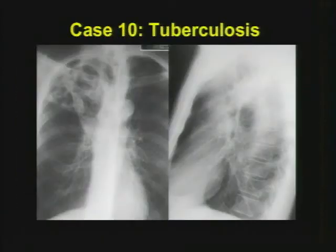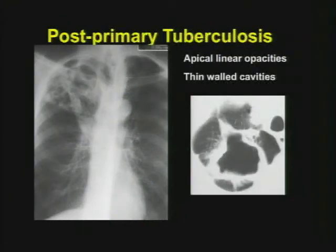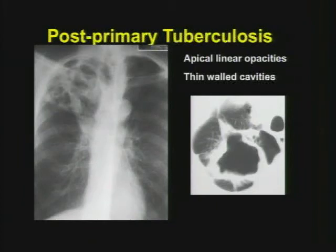Case number ten: post-primary tuberculosis. Notice the cavitation in the apices, the volume loss, the minor fissure and hilum are elevated, there's a lot of scarring. On CT, you get lots of irregular cavities — usually not just one. Sometimes the walls can be fairly thick, sometimes very thin. The apical location, multiplicity of abnormalities, and often evidence of adenopathy or a history of positive PPD help distinguish this from a big cavitary squamous cell carcinoma, which is usually fairly clear by anatomy and wall appearance.